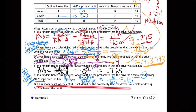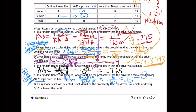Does F say given anywhere? No — no given. So F again is no given, which means the denominator is going to be the total number again. We only change the denominator on a given problem that limits the possibilities.